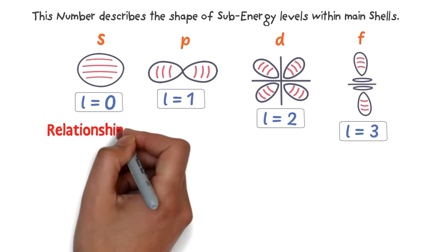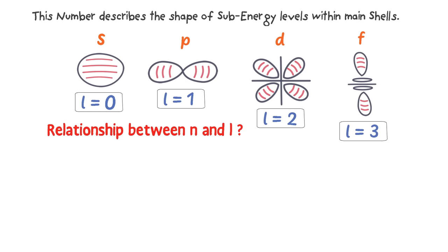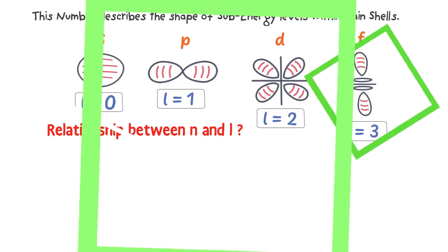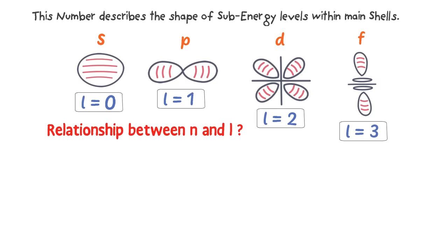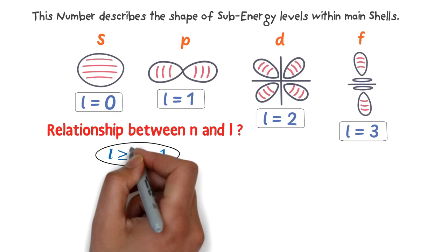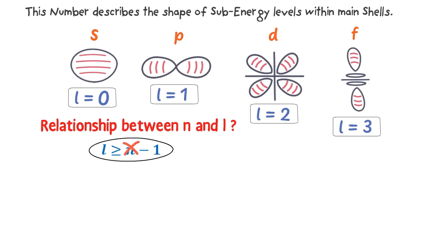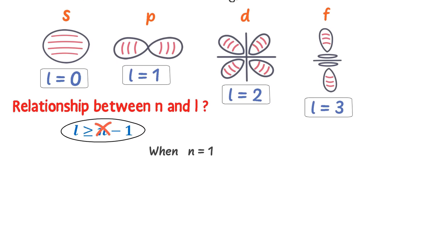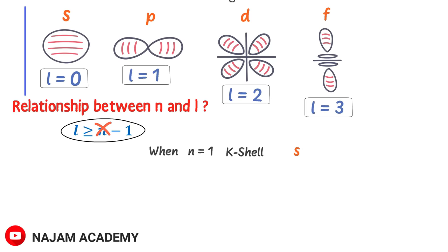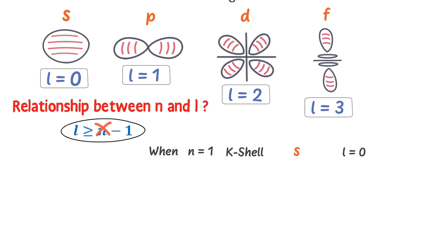Now what is the relationship between main energy levels n and sub energy levels l? Well the relationship between them is l is greater than or equal to n minus one. But I do not use this formula — I use my personal trick. When n is equal to one it is K shell, meaning K shell has one sub energy level: s. And we know that for s, l is equal to zero. So when n is equal to one, l is equal to zero.